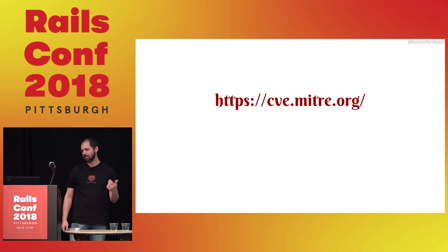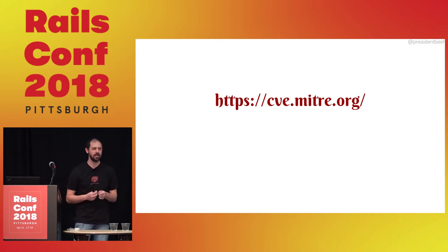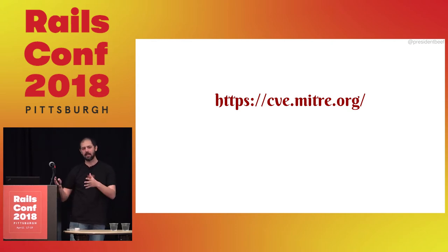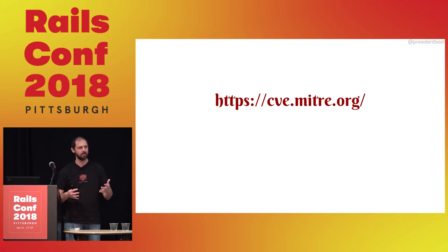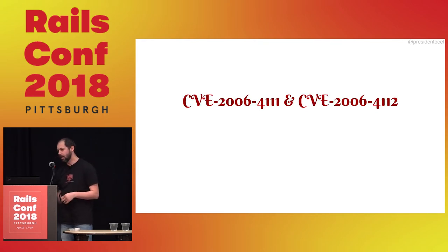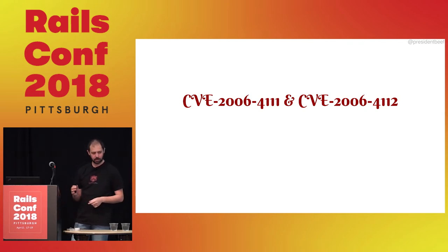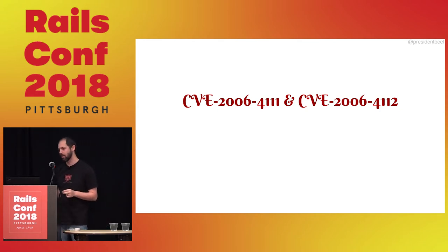The reason they do that is so we have a coherent way to refer to vulnerabilities. Otherwise we'd be saying 'in 2006 there was a security issue, it was like this thing' and getting confused. You can assign these identifiers to publicly announced vulnerabilities so we can all talk about them clearly. The middle number is the year — usually the year it comes out, sometimes the year the number was requested. So in 2006, there were two CVEs that came out for Rails.